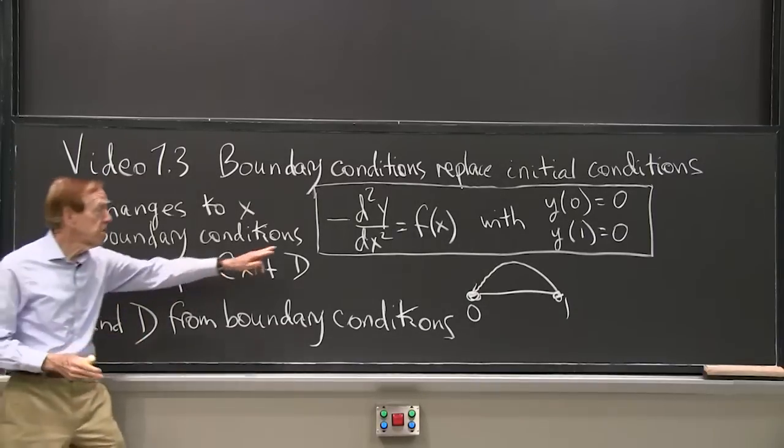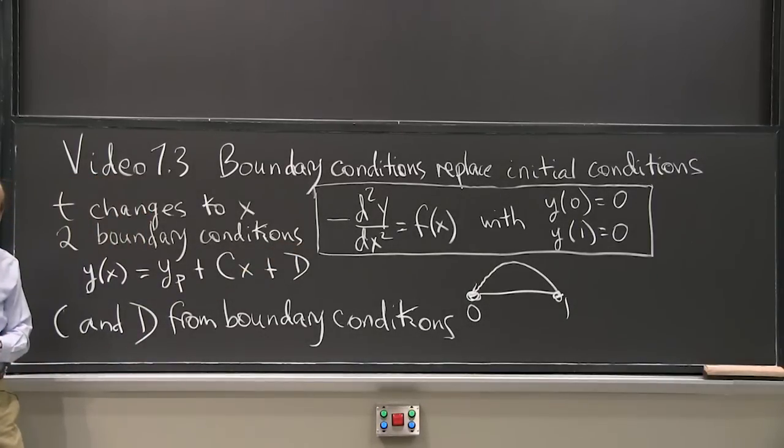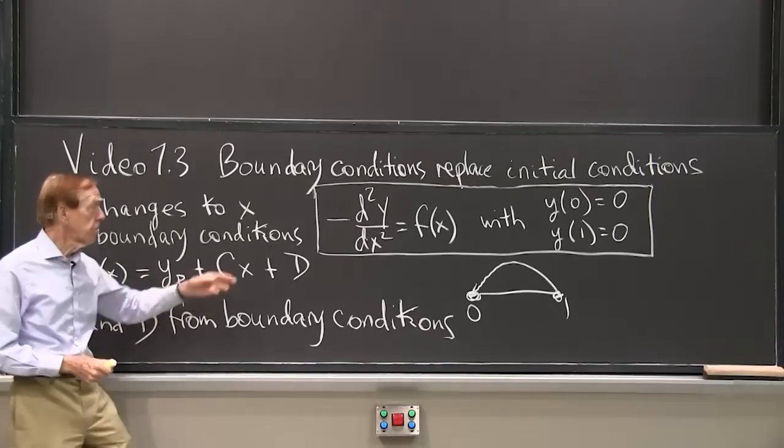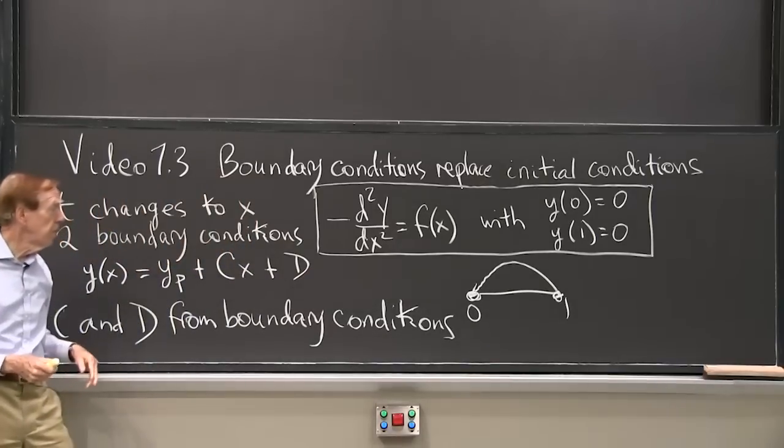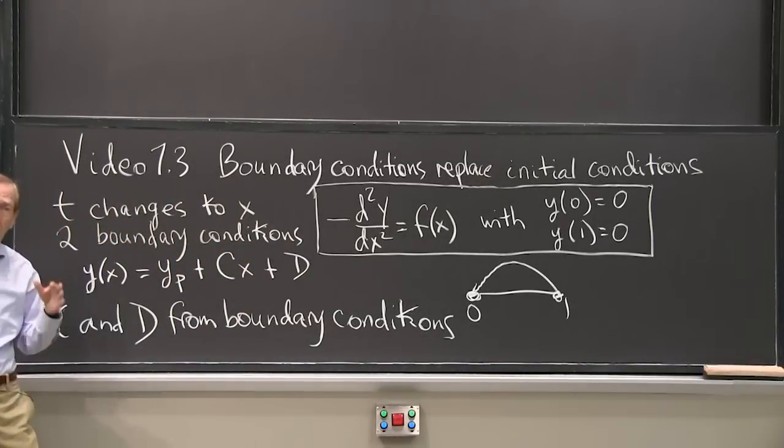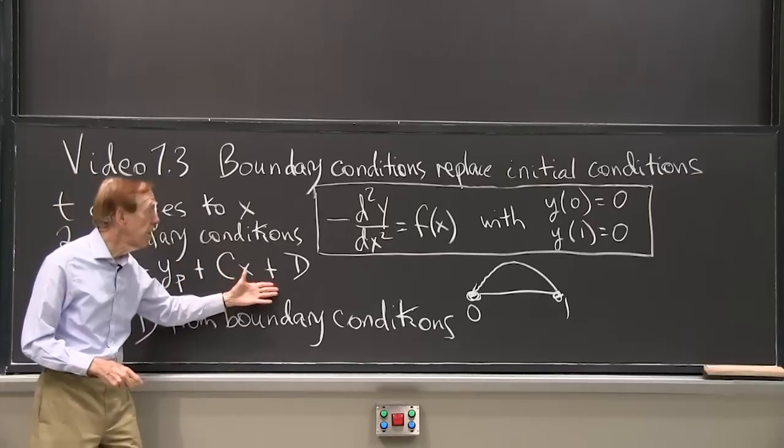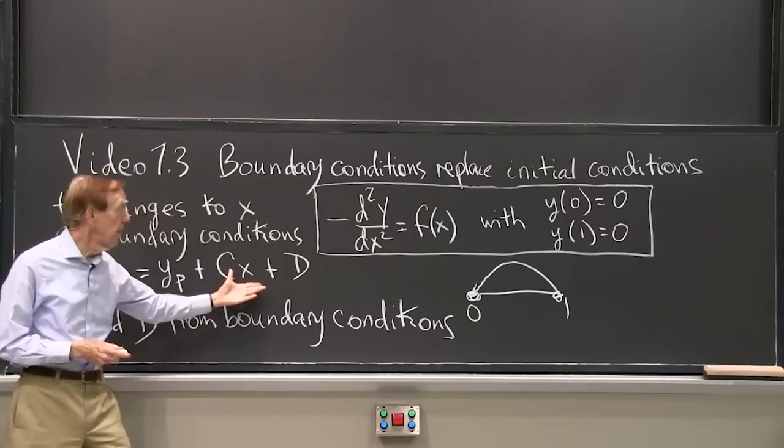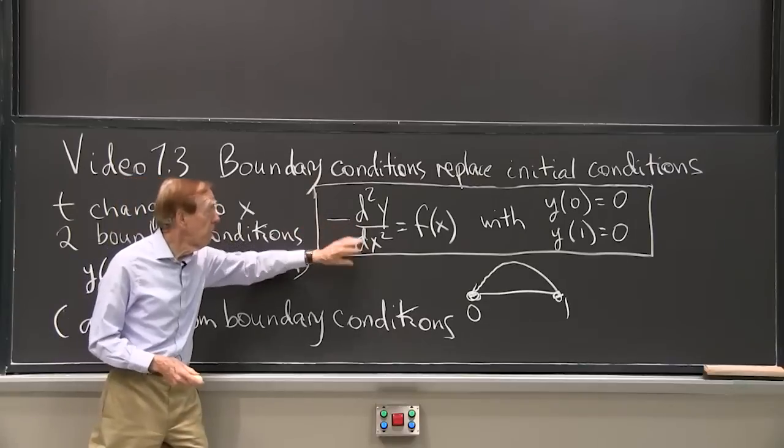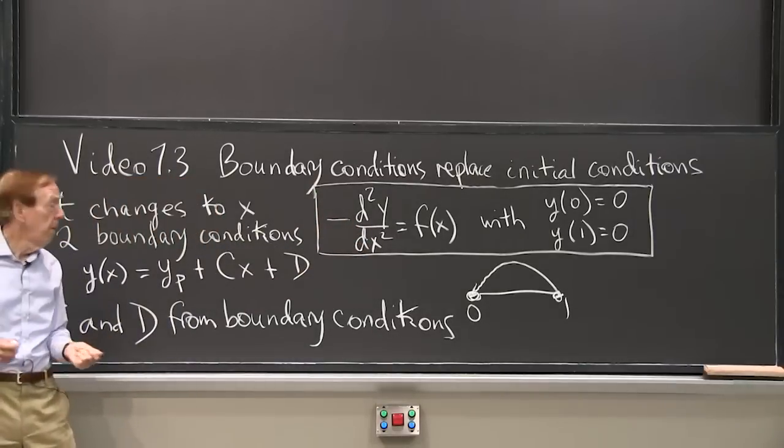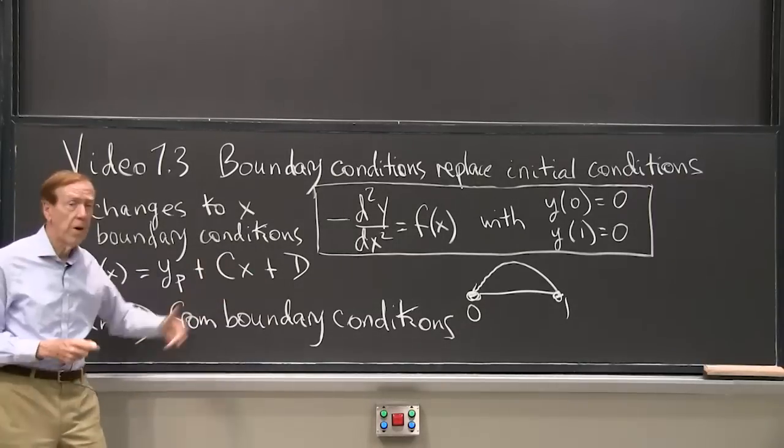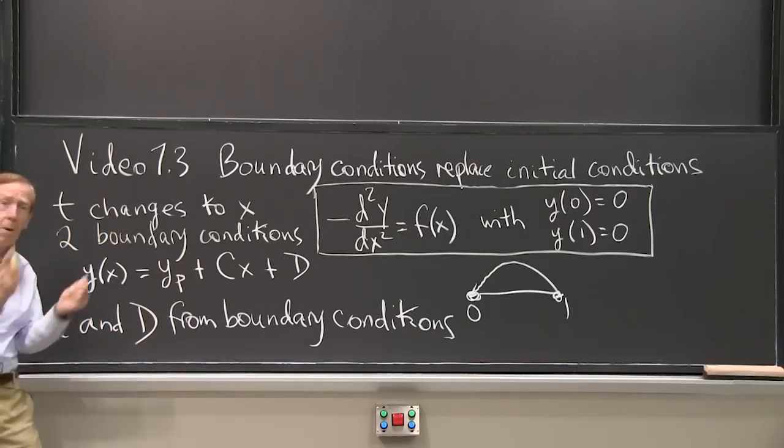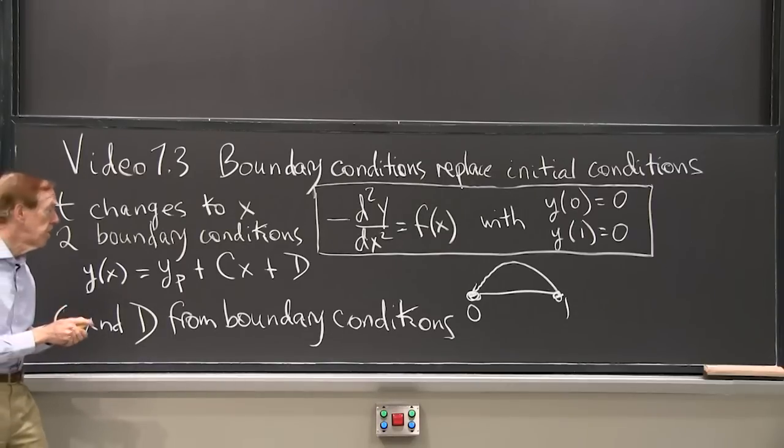As far as the solution to the equation goes, there's nothing enormously new. I still have a y particular, a particular solution that solves the equation. And then I still have the y null, the homogeneous solution, any solution that solves the equation with 0 on the right hand side. And in this example, this is especially simple. The null equation would be second derivative equals 0, and those are the linear functions that have second derivative equals 0. So there's the general solution. And now I have to put in not the initial conditions, but the boundary conditions.